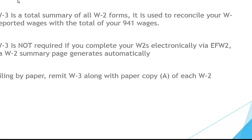A W-3 is a total summary of all W-2 forms, used to reconcile your W-2 wages with your total 941s. A W-3 is not required if you complete your W-2s electronically via the EFW-2, because that system automatically generates a summary. If you're filing by paper, remit a W-3 along with the paper Copy A's of each W-2.